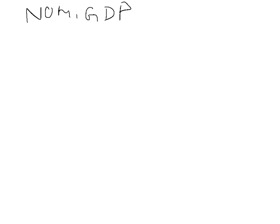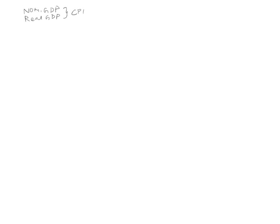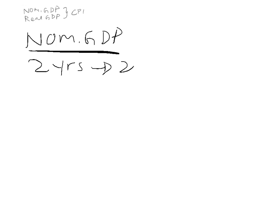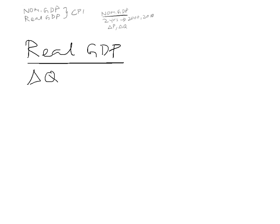Just a brief note on comparing nominal GDP with real GDP, and then once we've looked at that we can compare it with the CPI. With nominal GDP, when comparing two years — let's say the year 2000 and the year 2010 — what we're doing is looking at the change in price and the change in quantity over both years. With real GDP, we have to fix one of our unknowns, so we compare the change in output, the change in quantity, and fix price between the two years.